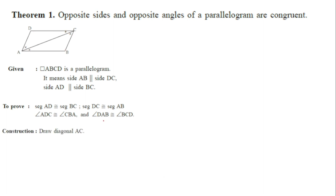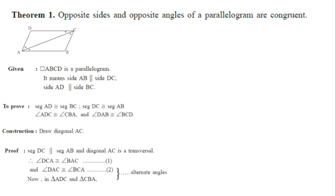To prove this we need a construction — we have to draw diagonal AC. By drawing this diagonal we have obtained two triangles, and we have to show that these two triangles are congruent, using what is given to us.